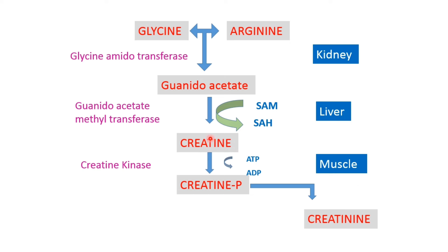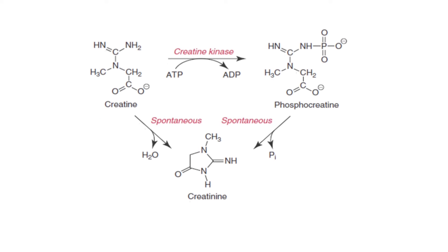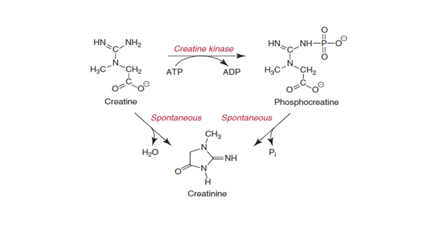Creatinine is synthesized from three amino acids — glycine, arginine, and methionine — and the steps occur in different organs. The first step occurs in the kidney, the second step in the liver, and the synthesis of creatine phosphate from creatine occurs in the muscle, where it serves as an immediate source of energy for muscle contraction. The conversion of creatine to creatinine is spontaneous and non-enzymatic.